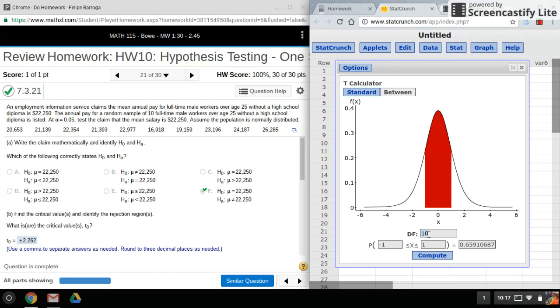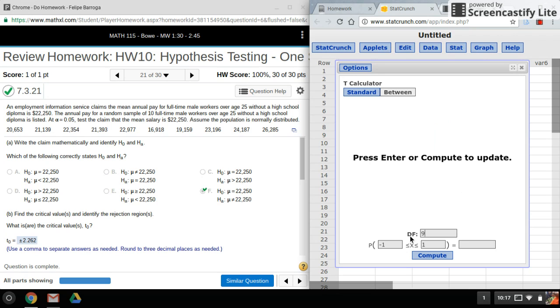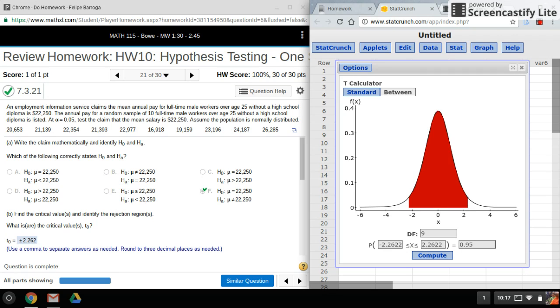So my degrees of freedom would be 9, and here I'll have to put in 1 minus alpha because we're doing between and not outside. And there's my critical values there and that's really all there is to it.